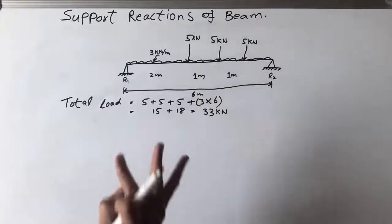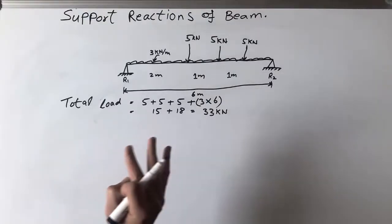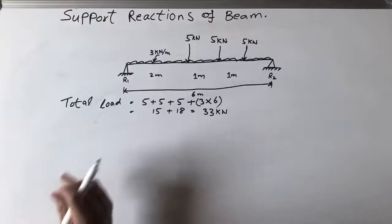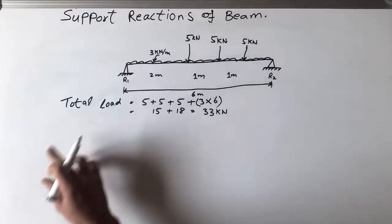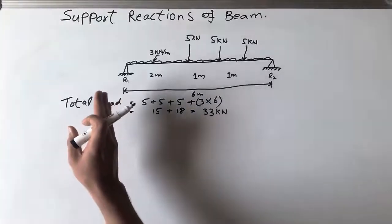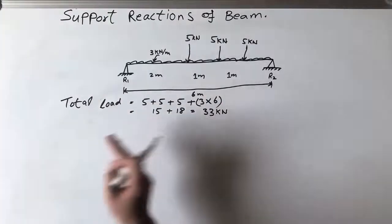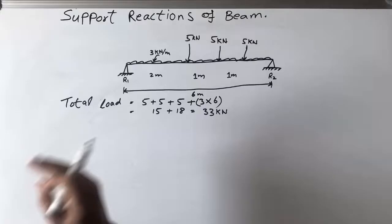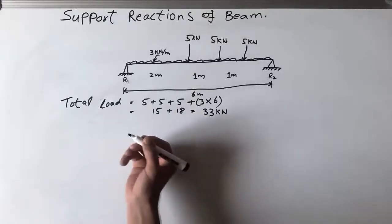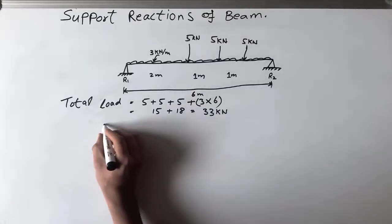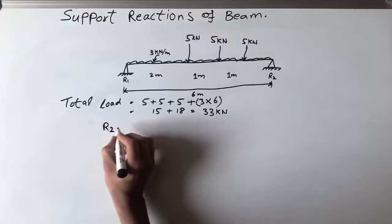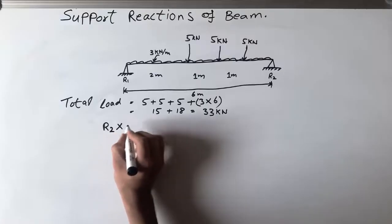We have three point loads and one uniformly distributed load. To calculate the reactions at point A and point B, I have named them R1 and R2. To find R2, we take moments: R2 multiplied by 6 (since 6 meters is the total span between the two supports).